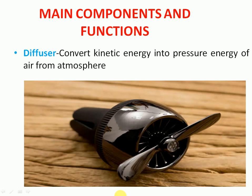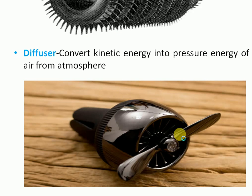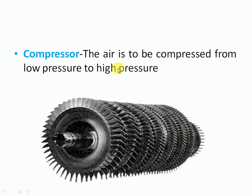First component: the diffuser. The diffuser is used to increase the pressure and reduce the velocity of atmospheric air. Atmospheric air first enters into the diffuser. In the turbo propeller engine, the diffuser is used to increase the pressure energy of air from the atmosphere.